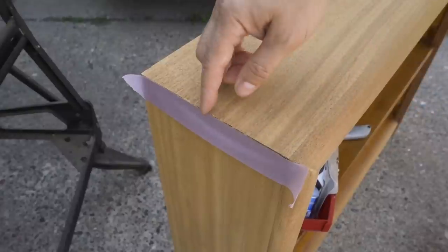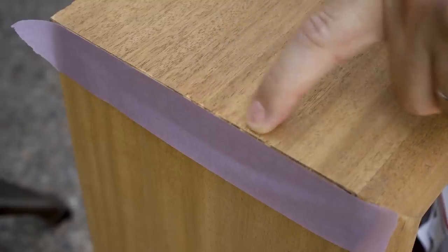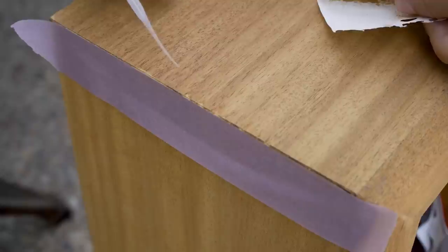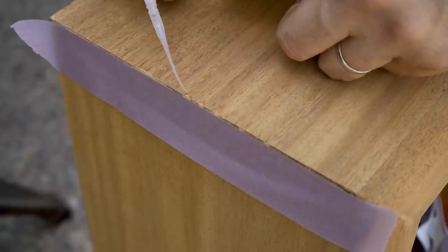There are some really small chips in the veneer on the edge here. And I'm going to try filling those with some super glue and some sanding dust that I collected.